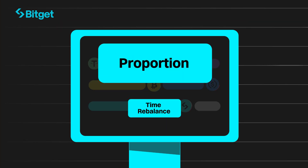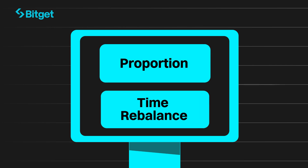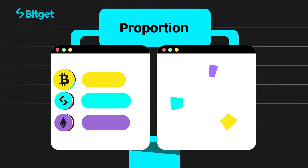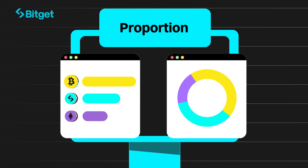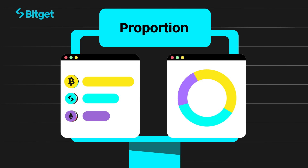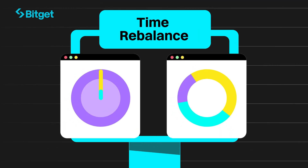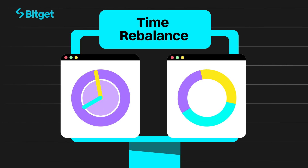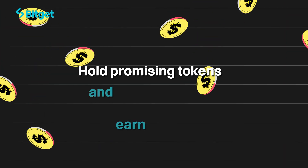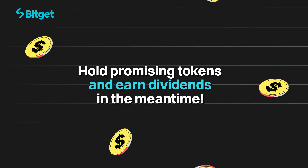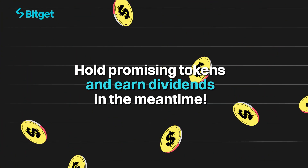Choose from two modes: Proportion or Time Rebalance. Proportion tweaks your portfolio according to changes to your token's market cap ratio, while Time Rebalance rebalances your portfolio if it deviates too far within a fixed time period. This way, you'll hold promising tokens and earn dividends in the meantime.